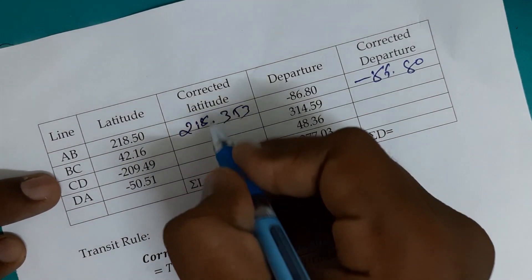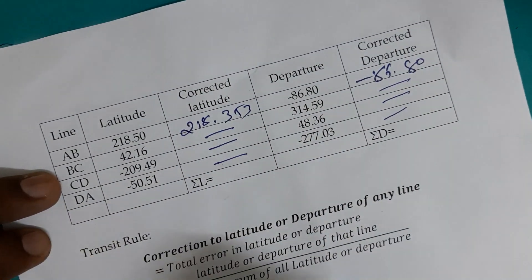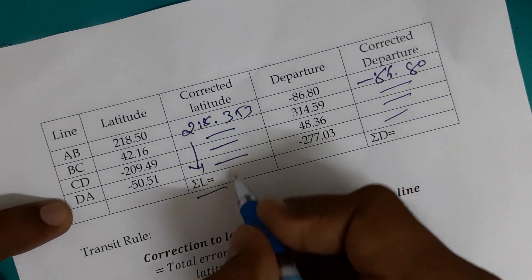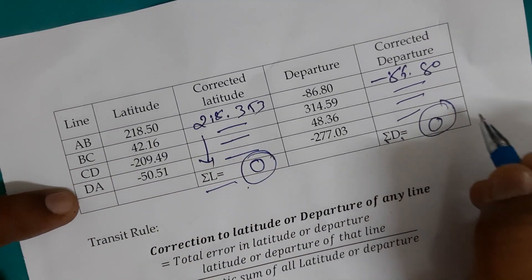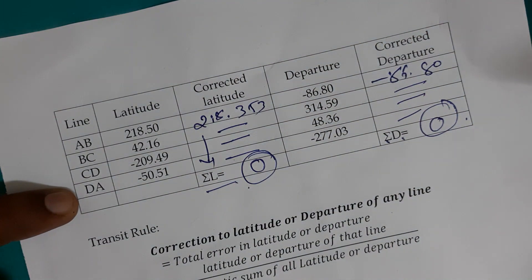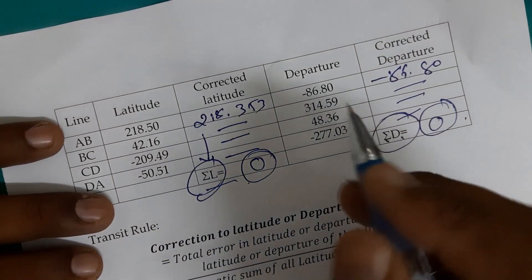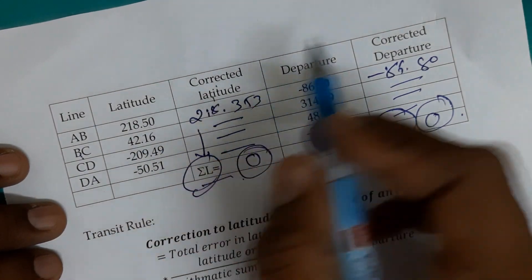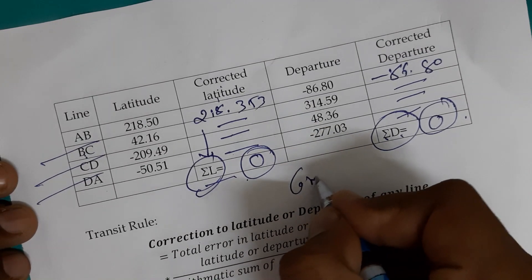Now you need to find the corrected latitude and departure for lines BC, CD, and DA using the same procedure. When you calculate the summation of L, then sigma L will be 0, and similarly sigma D will be 0. If both values are 0, there is no closing error and no need to adjust the traverse further. Our traverse is 100% balanced when sigma L and sigma D both become 0. Calculate the latitude and departure for lines BC, CD, and DA and write them in the table.